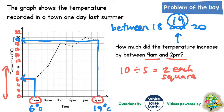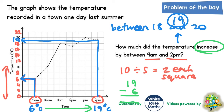Now if we go back to the original question, it says by how much did it increase? We're trying to find the increase from 6 degrees up to 19 degrees. We find the difference by doing 19 subtract 6. 9 subtract 6 is 3, and 1 subtract 0 is 1, so that is a difference of 13 degrees C. The final answer to the question - by how much did the temperature increase between 9am and 2pm - is 13 degrees C.